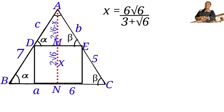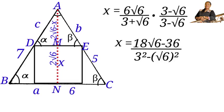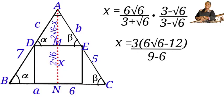We cannot leave the answer in this form, so we rationalize: x equals six root six over three plus root six, multiplied by three minus root six over three minus root six. Simplifying, the numerator gives eighteen root six minus thirty-six, and the denominator gives three squared minus root six squared, which is nine minus six equals three. Factoring three from the numerator, x equals six root six minus twelve.